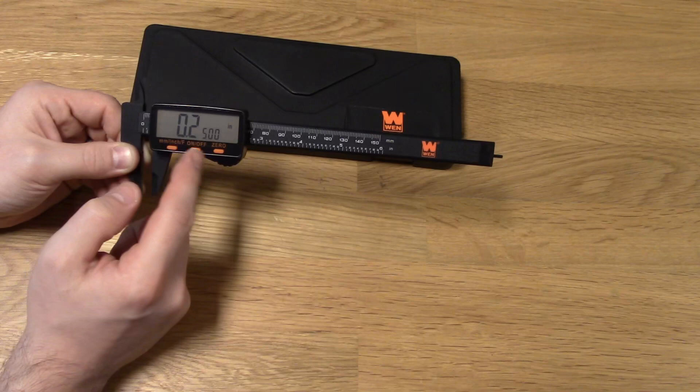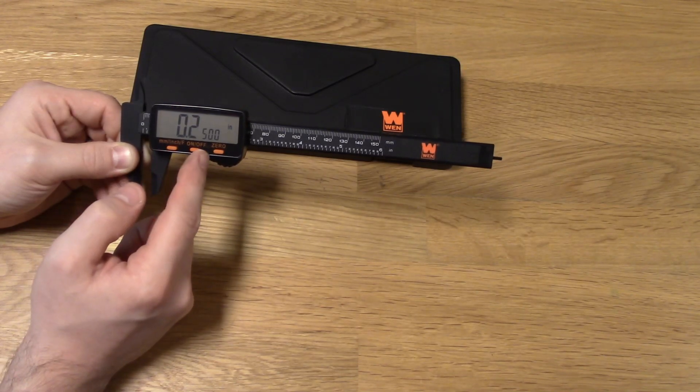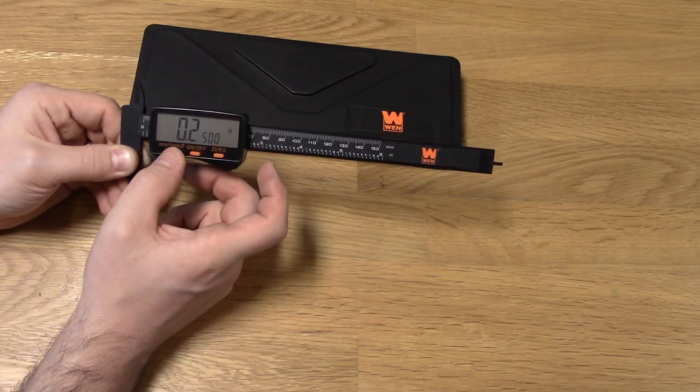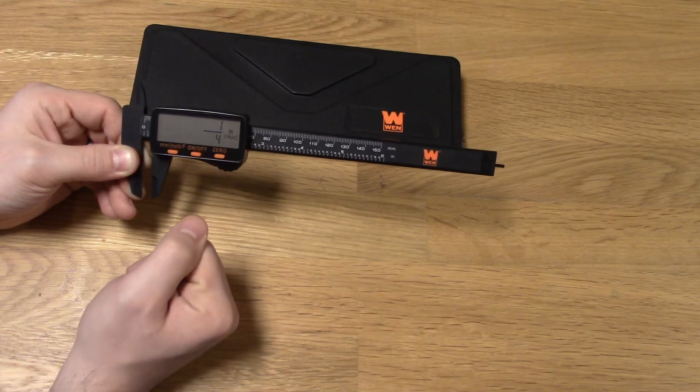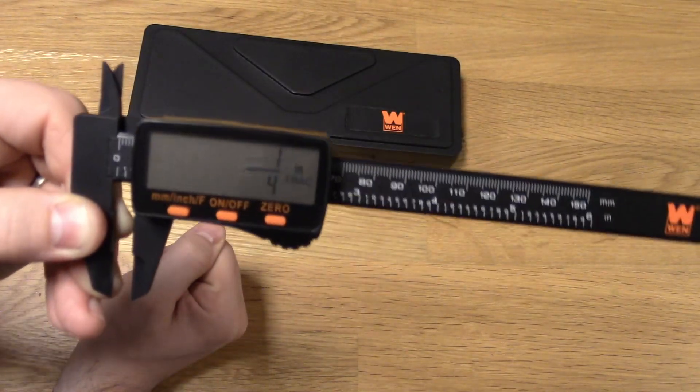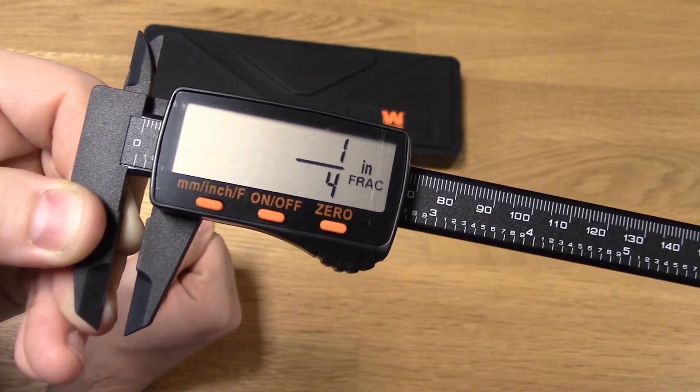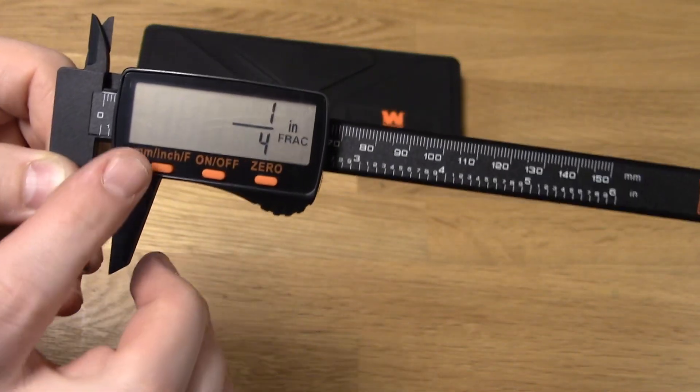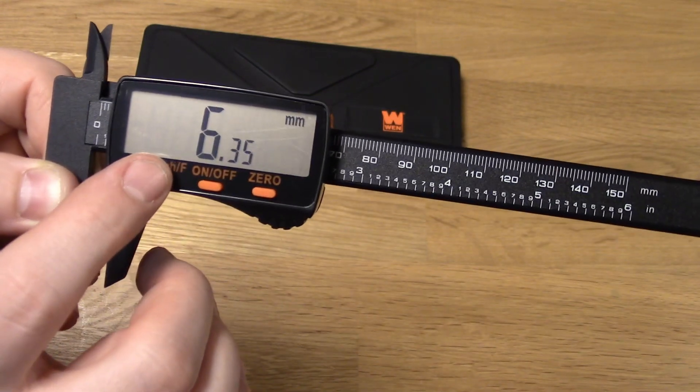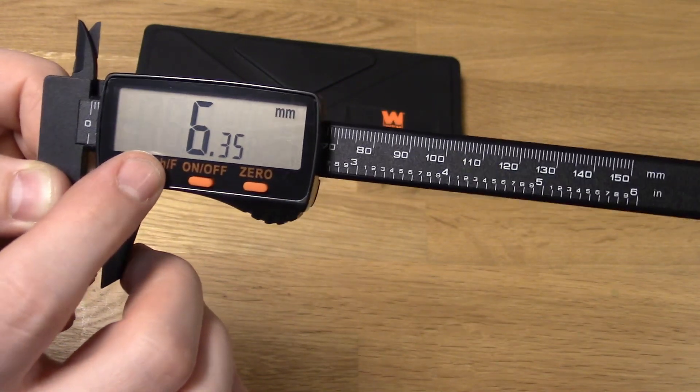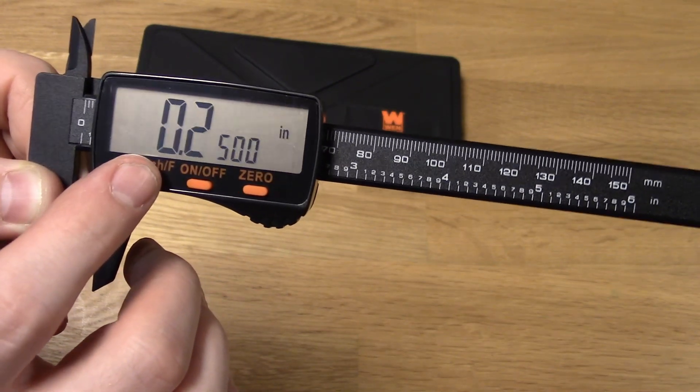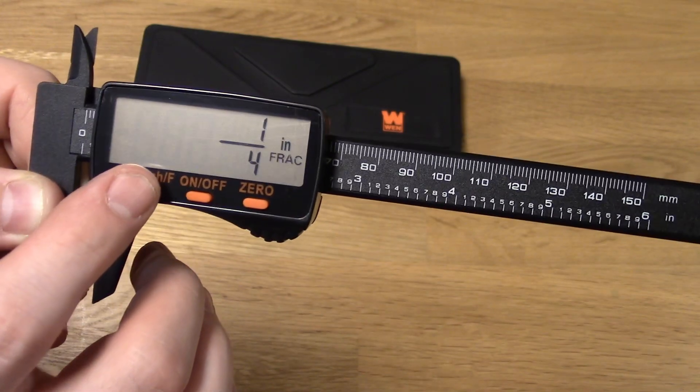So you'll see that this is at 0.25 inches, so when you go to fractions, it will show one quarter inch, just like so. Or 6.35 millimeters. Or 0.25 inches. Pretty cool.